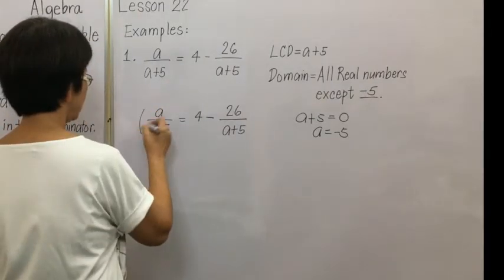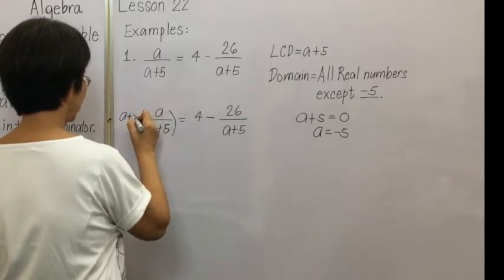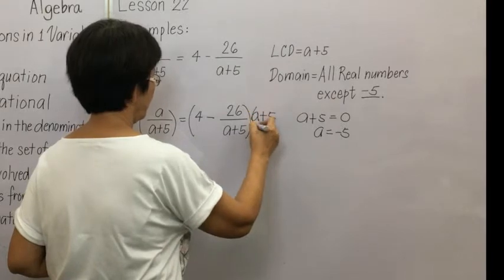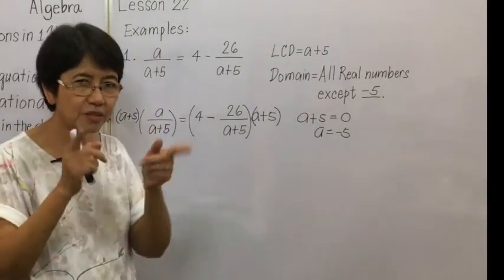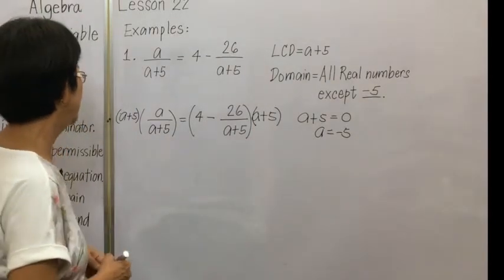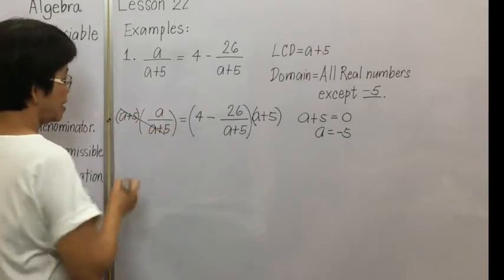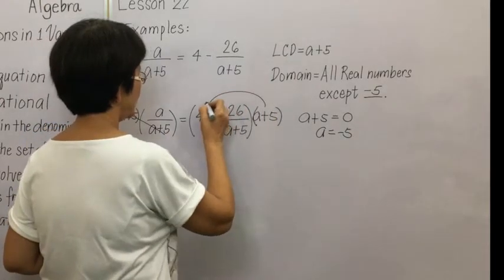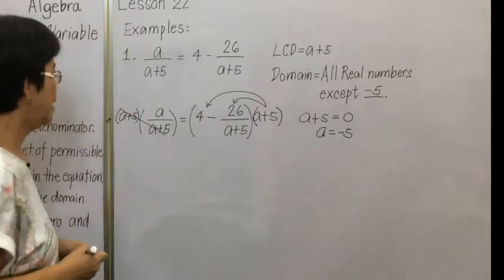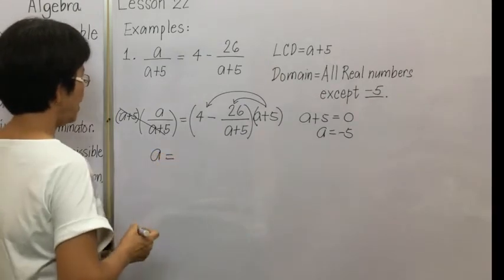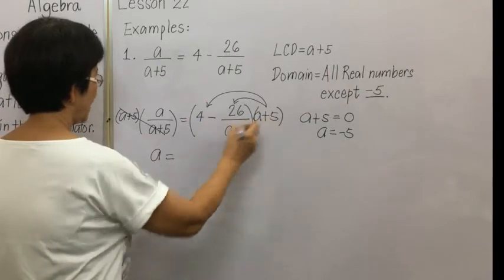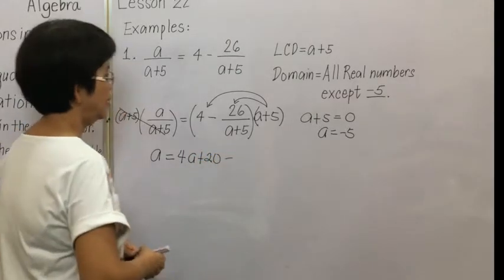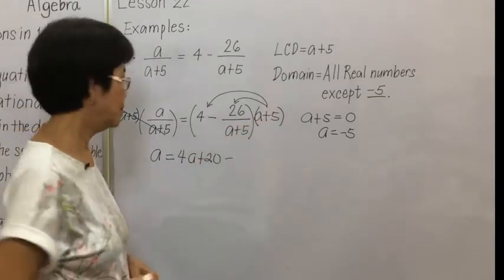We multiply both sides by a plus 5. When you multiply, you have to enclose the multiplier in parentheses. If you have only one fraction, you can directly cancel. But if there are two fractions, you have to distribute the multiplier — it will be distributed to 4 and to the fraction. So we have a equals 4 times a plus 5, which is 4a plus 20, minus 26.